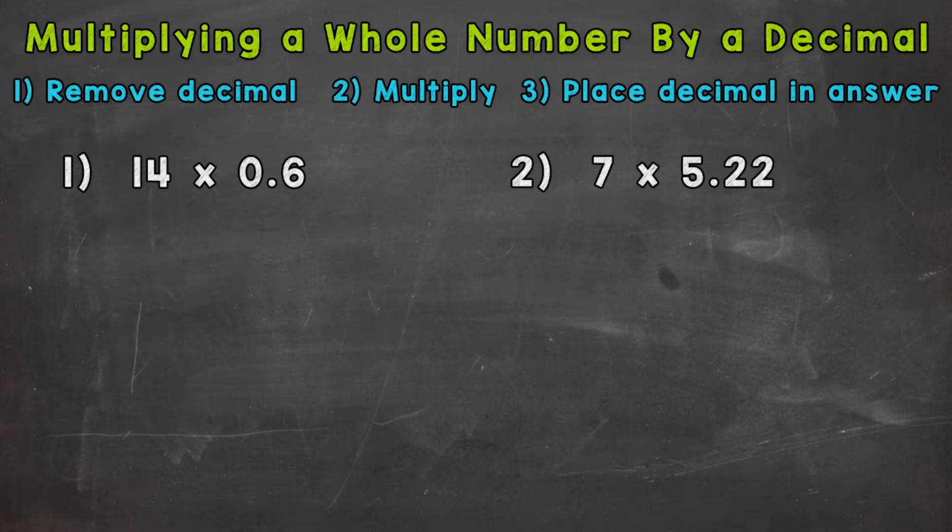In this video, I'm going to cover how to multiply a whole number by a decimal. So let's jump right into number one, where we have 14 times 0.6. The three steps that we're going to take in order to solve these two examples correctly are at the top of your screen.